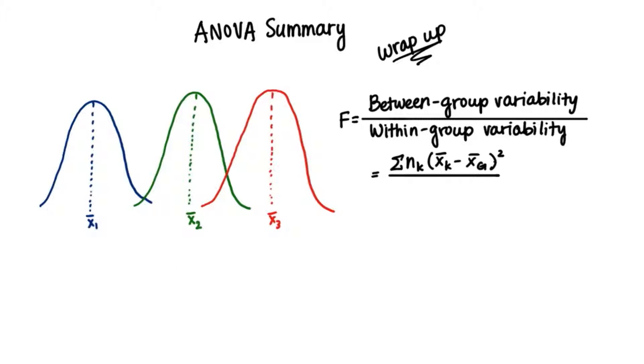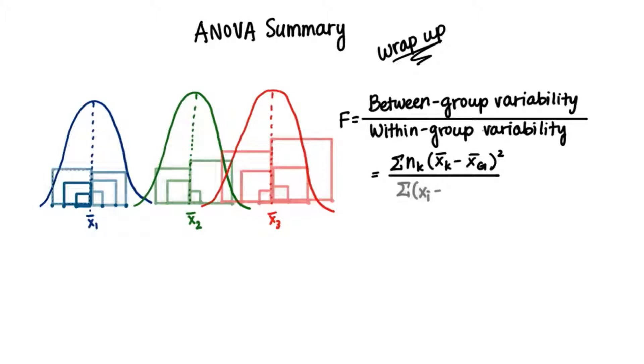Then we have to look at the within-group variability, which is essentially the square deviation of each value in each sample from the respective sample mean. So we add up all sums of squares from the respective sample mean.